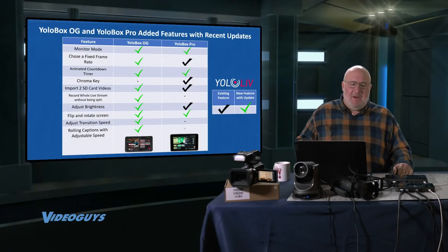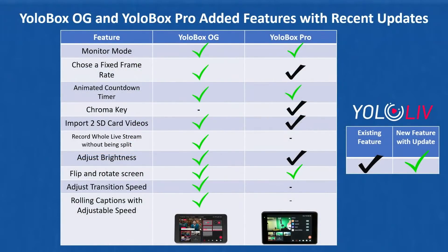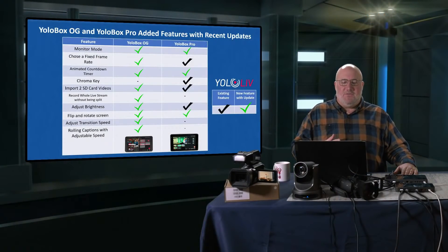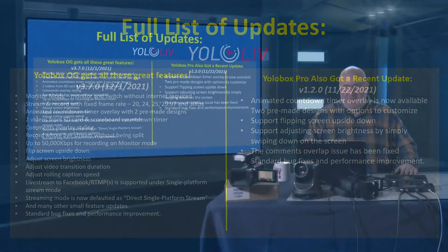Now let's compare the YoloBox OG with the YoloBox Pro on added features. The black checkmarks are existing features that were already in the YoloBox Pro. Since then, we've seen firmware updates add features to both units. All the green checks are recently added features — and you can see not only has the YoloBox OG caught up, it's even gotten a few features that aren't yet in the YoloBox Pro, though I'm certain they'll be added shortly.